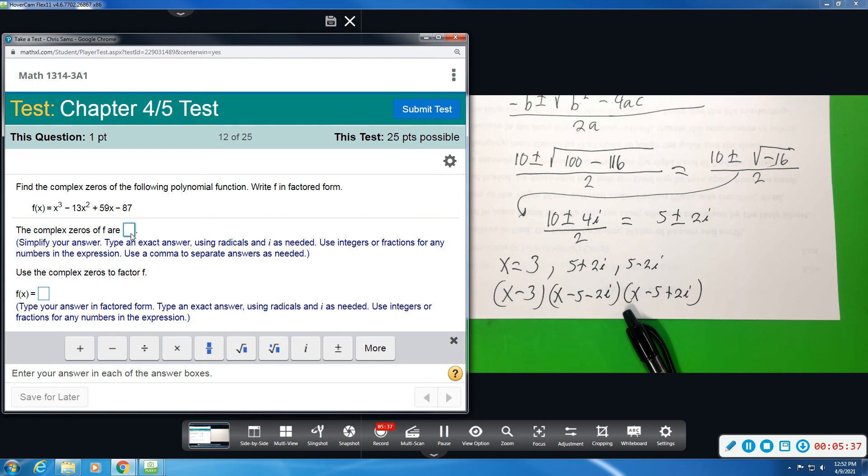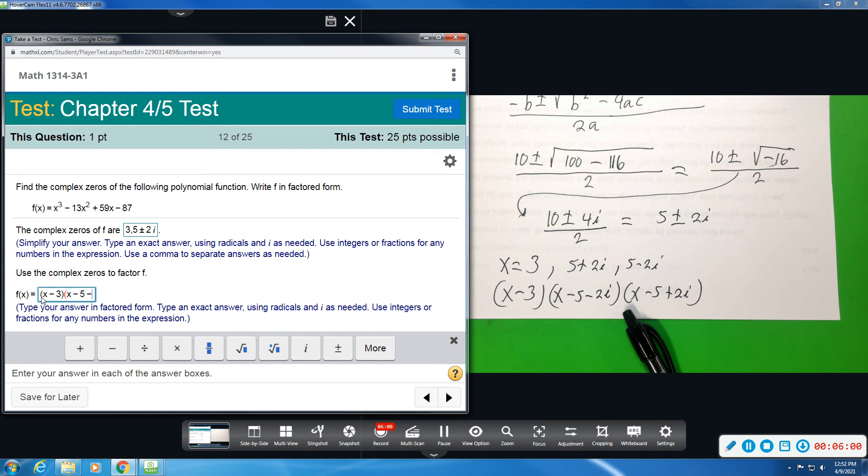So here I'm going to say 3 comma, and then I think we can put it in this form. So I'm going to say 5 ± 2i. And then in factor form, x - 3, x - 5 - 2i. And then x - 5 + 2i. Make sure. Okay, so that all looks good.